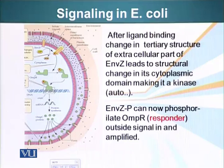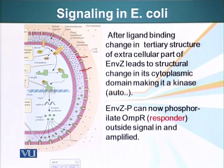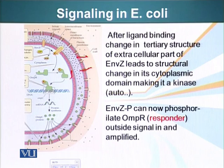E. coli has two membranes: an outer membrane and an inner membrane, and it has a cell wall also. The outer membrane of this bacteria is pretty much permeable, because it has these holes you can see, and most molecules can get through these pores. The inner membrane, on the other hand, is selectively permeable — not everything can get through because it does not have these pores. The space between these two membranes is called the intramembranous space.